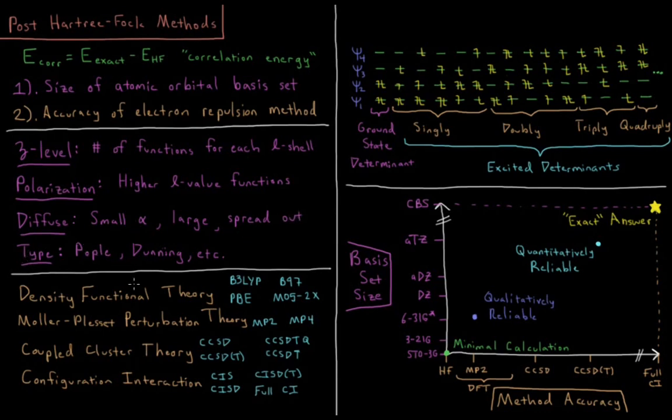And finally, there's the type of function that you're interested in. These generally fall into two main categories called either Pople sets or Dunning sets. So Pople sets have names like STO3G, 3-2-1G, 6-3-1G star, whereas the Dunning type sets have names like CCPVDZ, augmented CCPVDZ, augmented CCPVTZ, etc.